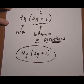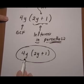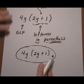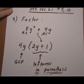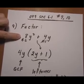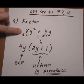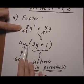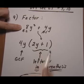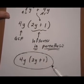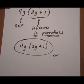That gives us our final answer: 4y times (2y + 1). That is a completely factored expression. One way to check that you did it right is to multiply it back out — get rid of the parentheses and see if you get the original expression, 8y² + 4y, back again. 4y times 2y gives 8y², plus 4y times 1 gives 4y, so yes, we get 8y² + 4y back, which means we did it correctly.